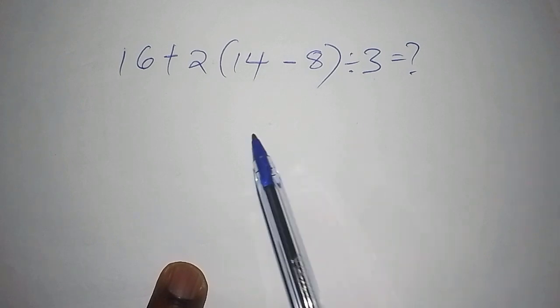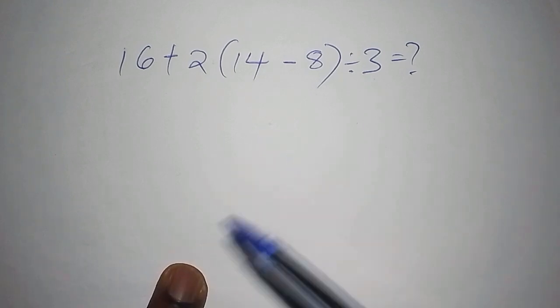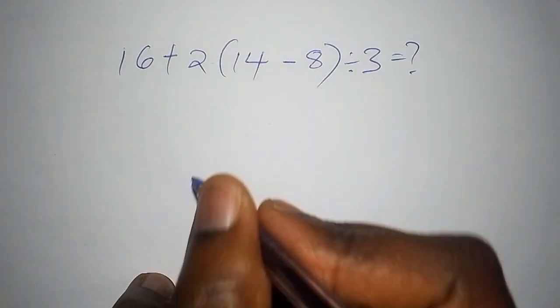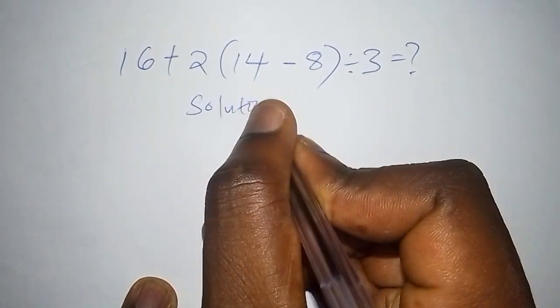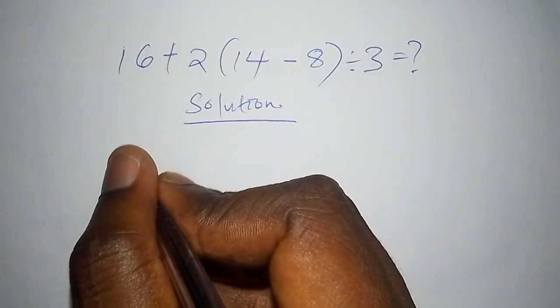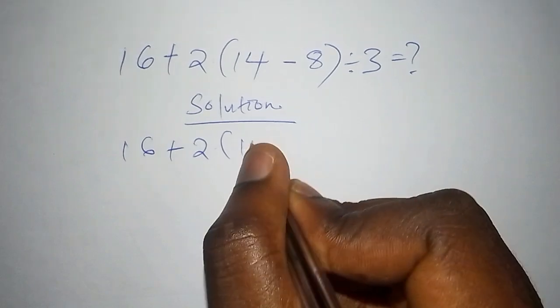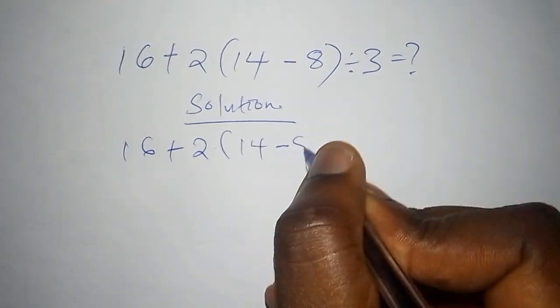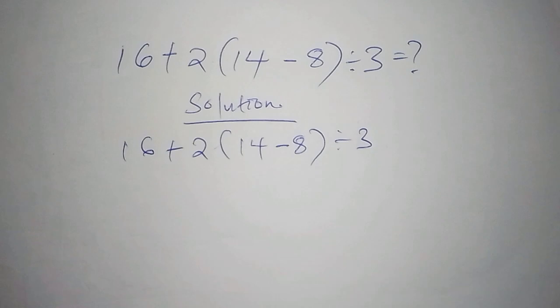Let's start with the solutions. We have 16 add to 2 into bracket 14 subtract from 8 into bracket divide by 3.